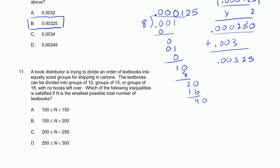Problem 11. A book distributor is trying to divide an order of textbooks into equally sized groups for shipping cartons. The textbooks can be divided into groups of 12, groups of 15, or groups of 18 with no books left over. So the number of books is divisible by these three numbers. Which inequality is satisfied if n is the smallest possible total number of textbooks? We need the least common multiple of 12, 15, and 18.